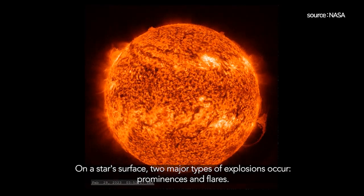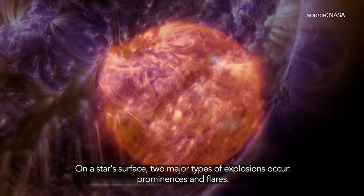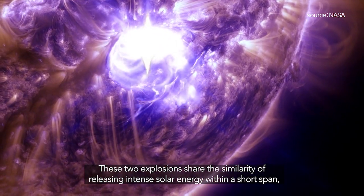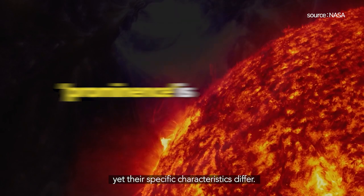On a star's surface, two major types of explosions occur: prominences and flares. These two explosions share the similarity of releasing intense solar energy within a short span, yet their specific characteristics differ.